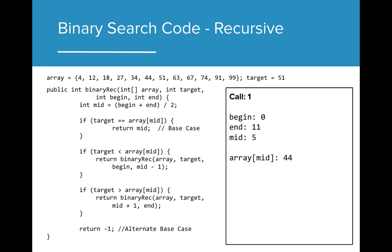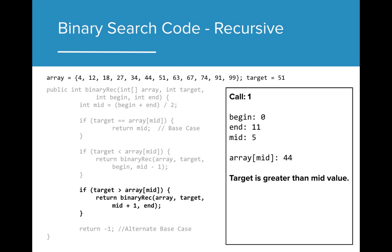The biggest change at the start of the code is that we are passing the beginning and ending values into our method. From there, we can calculate the midpoint the same way as before. Our base case is when we find our value. For this first iteration, we skip the base case using the recursive call. Our recursive call passes the original array, the target value, but then updates the starting point as it makes the call.